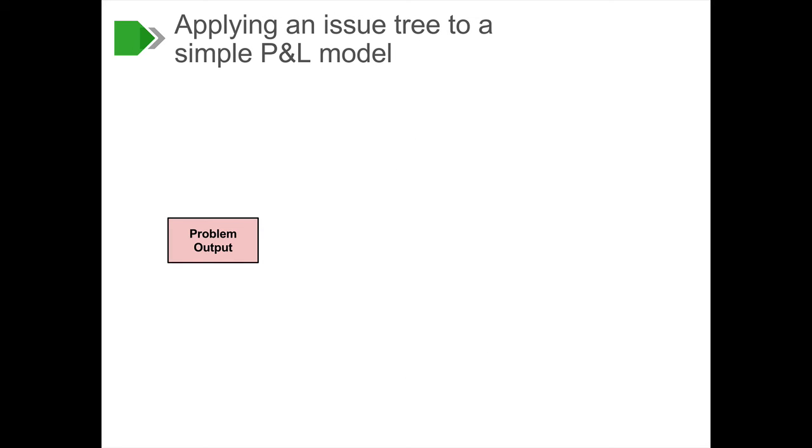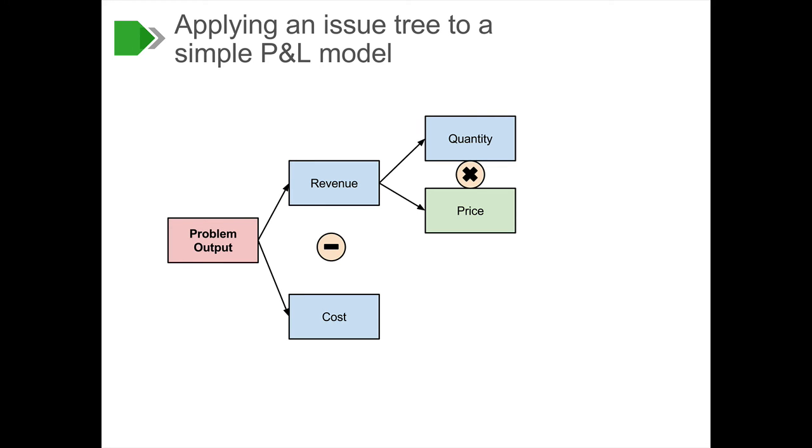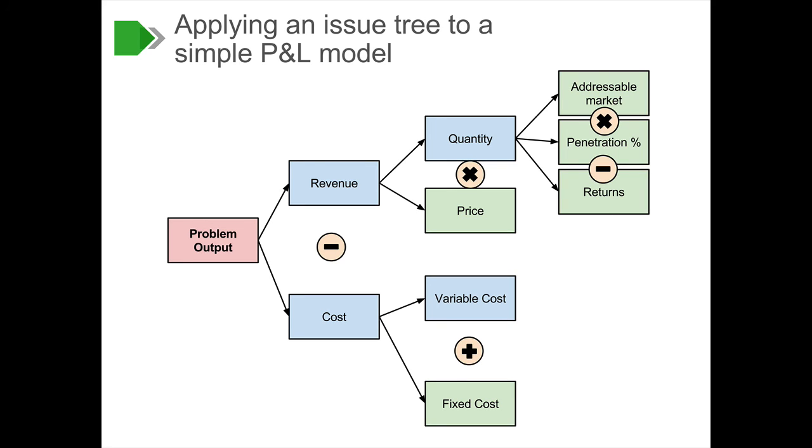Let's apply this to a real world problem statement, namely a profit issue tree. Profit is revenue minus cost. Revenue is price times quantity. Cost is the combination of variable cost and fixed costs. If you look at quantity, it may be a function of the addressable market, the penetration levels and the returns. And variable cost is going to be a function of the quantity sold times the variable cost per unit. For your Excel model, what you'd like to be able to do is build one of these mathematical issue trees that describe the entire set of relationships between all variables in the model you expect to build.